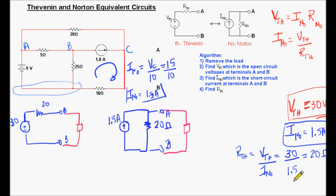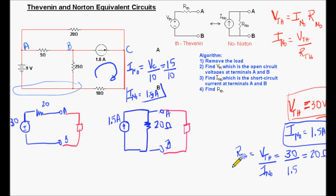There is also another method to find R_Thevenin or R_Norton, used only when there are independent sources such as independent current and voltage sources — as in this circuit. A separate video will cover that method. In general, if you find V_Thevenin and I_Norton, you can easily calculate R_Thevenin or R_Norton using their ratio, and this approach always works.